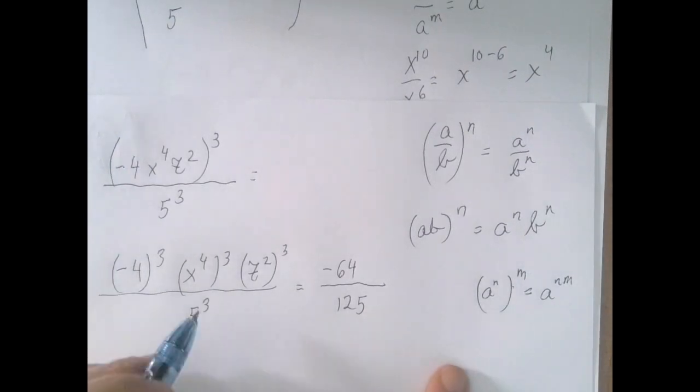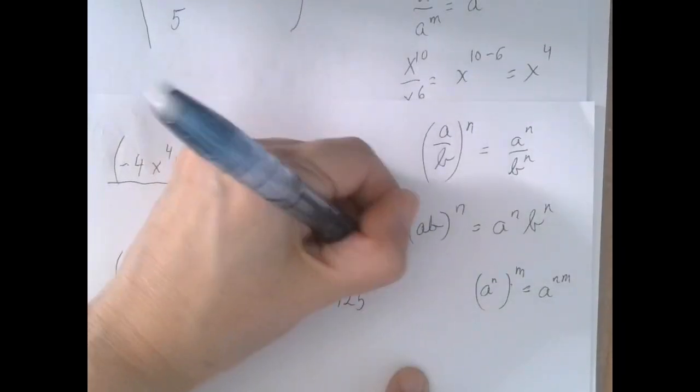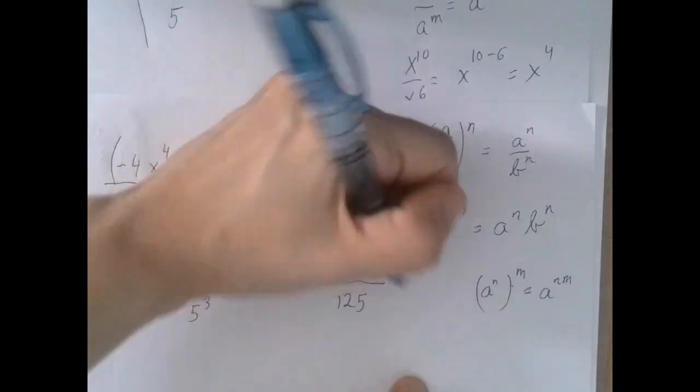So we have x to the twelfth power in the numerator and z to the sixth power also in the numerator.